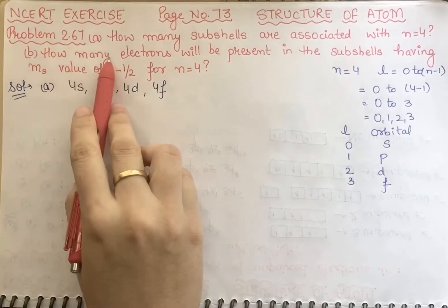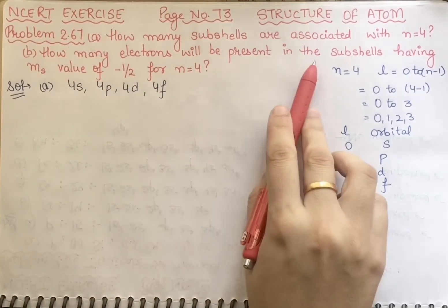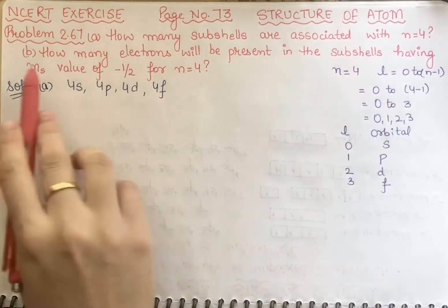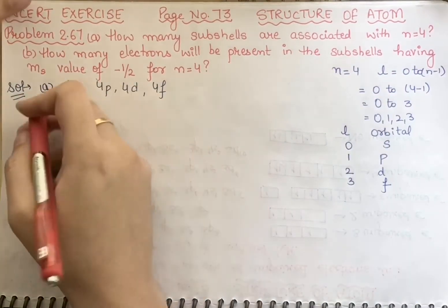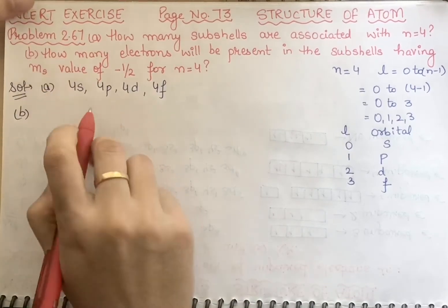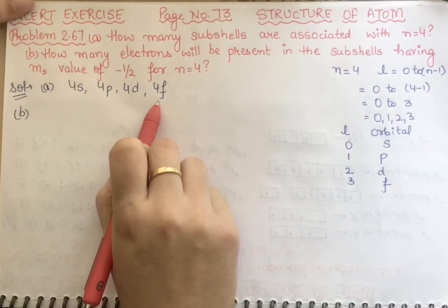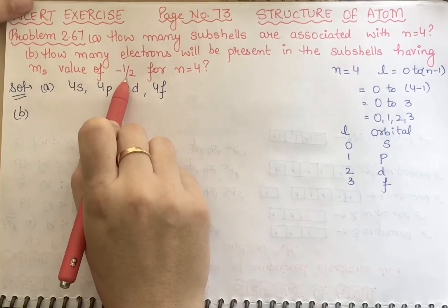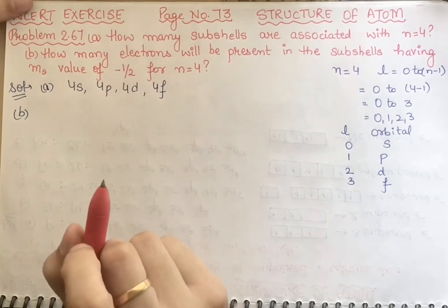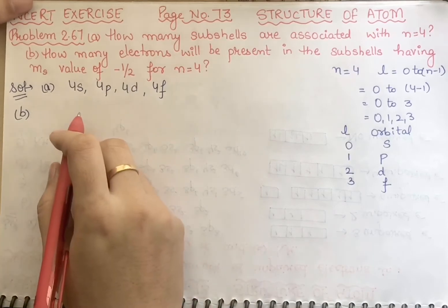Now what they are saying: how many electrons will be present in the subshells having ms value of minus half for n equal to 4? You have these subshells exist. Let me tell you that minus half, which you have ms value, which will be given to which electrons.